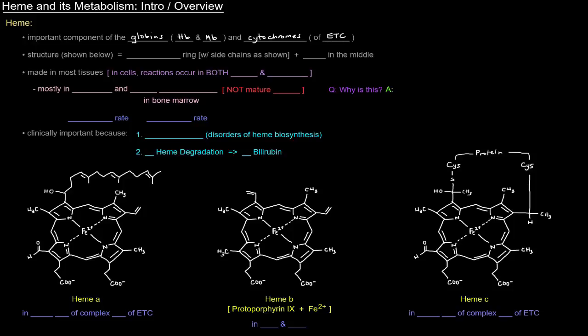Now heme, as far as its structure which is shown below here, contains really two key elements or components. The first component is the porphyrin ring, and I'll point it out here. That porphyrin ring can have side chains as we can see down here. The porphyrin ring is basically this portion here, that part inside there, and then these guys on the outside are the side chains.